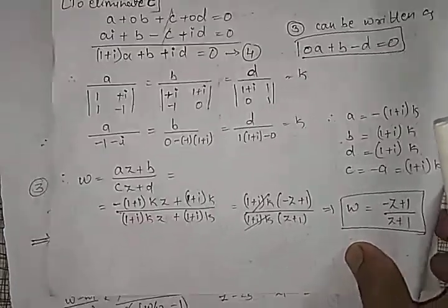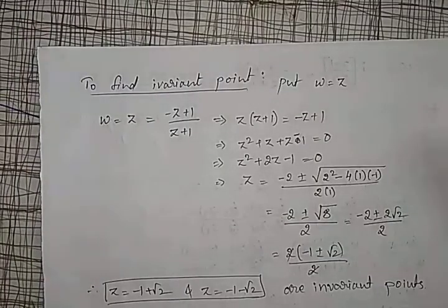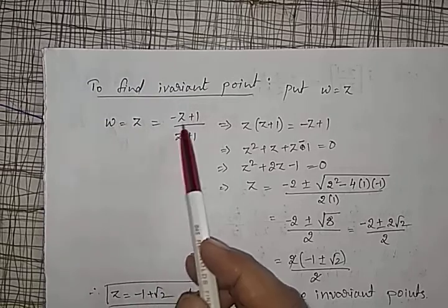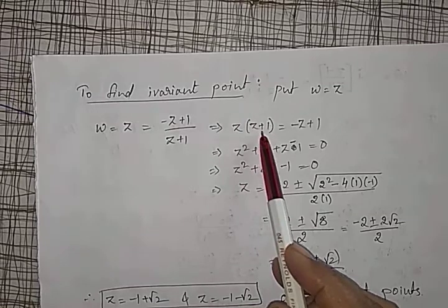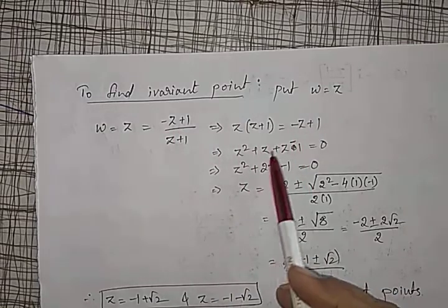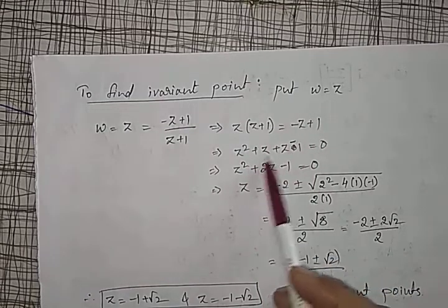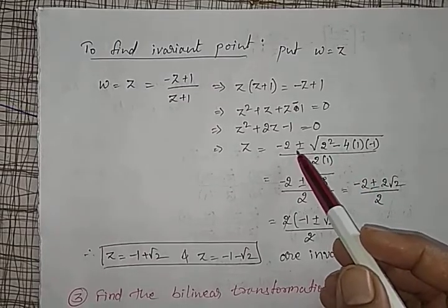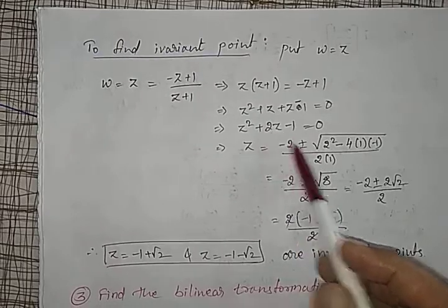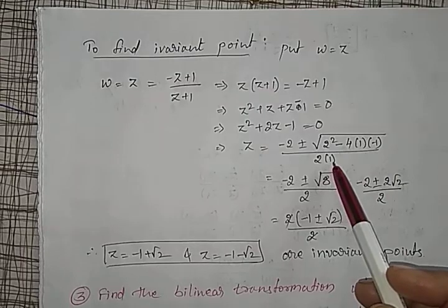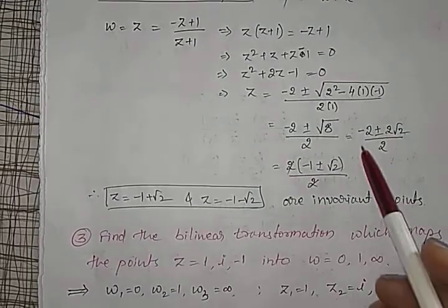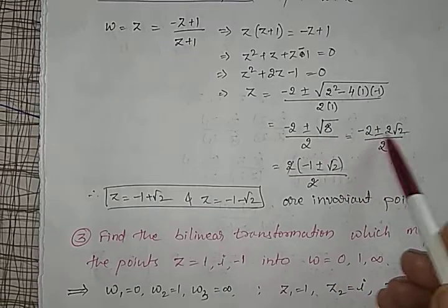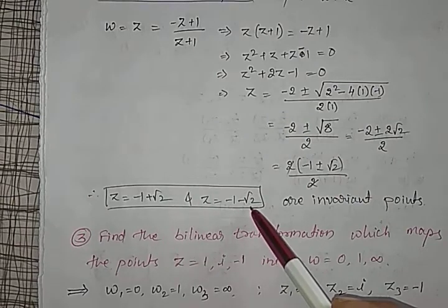To find the invariant (fixed) points of this transformation: a point is invariant when omega equals z. Substituting omega = z into z = (1 minus z)/(1 plus z): z(z + 1) = 1 minus z, giving z^2 + z + z minus 1 = 0, i.e., z^2 + 2z minus 1 = 0. Solving by the quadratic formula: z = (minus 2 ± sqrt(4 + 4))/2 = minus 1 ± sqrt(2). The two invariant points are z = minus 1 + sqrt(2) and z = minus 1 minus sqrt(2).